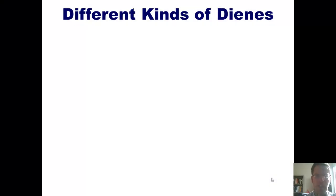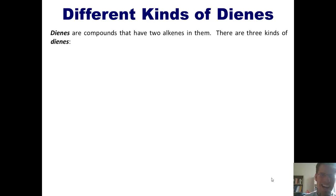I want to talk to you now about the subject of dienes. As we've talked about earlier in the semester, dienes are compounds that have two alkenes in them. There are three different kinds of dienes we'll worry about in organic chemistry.